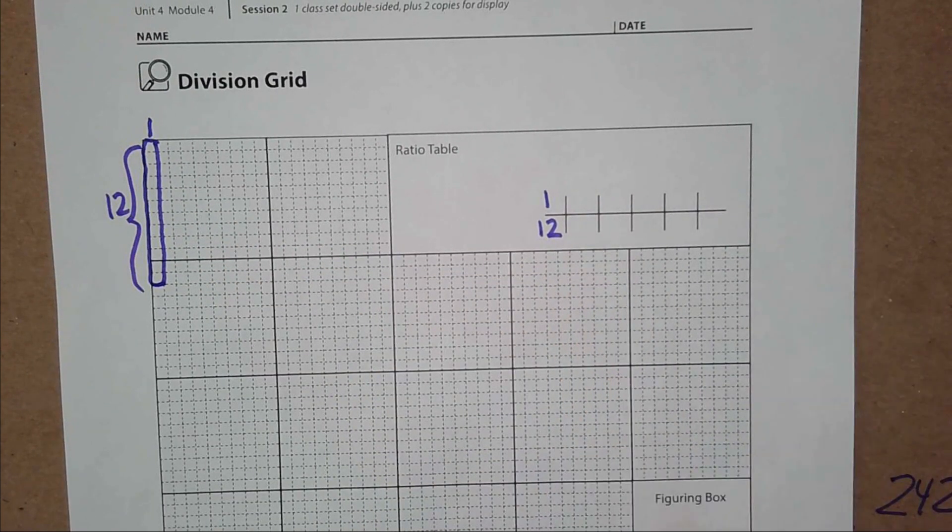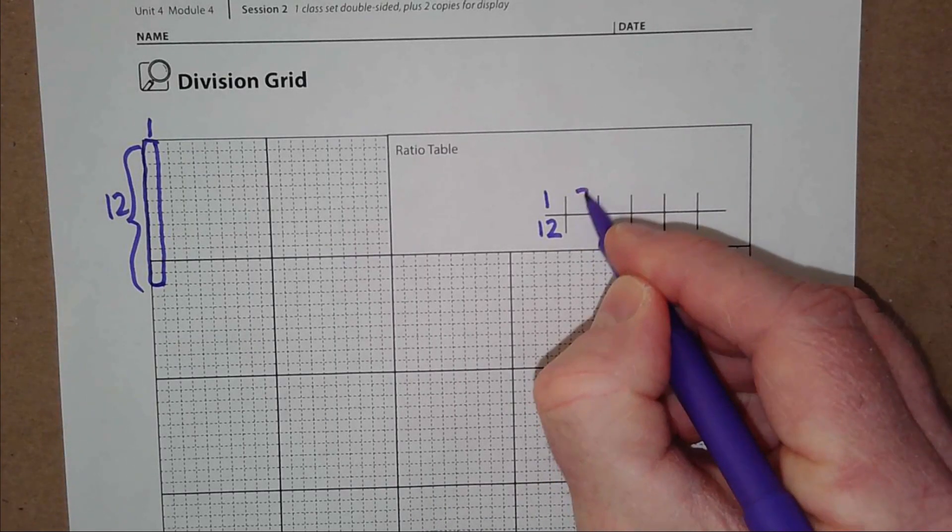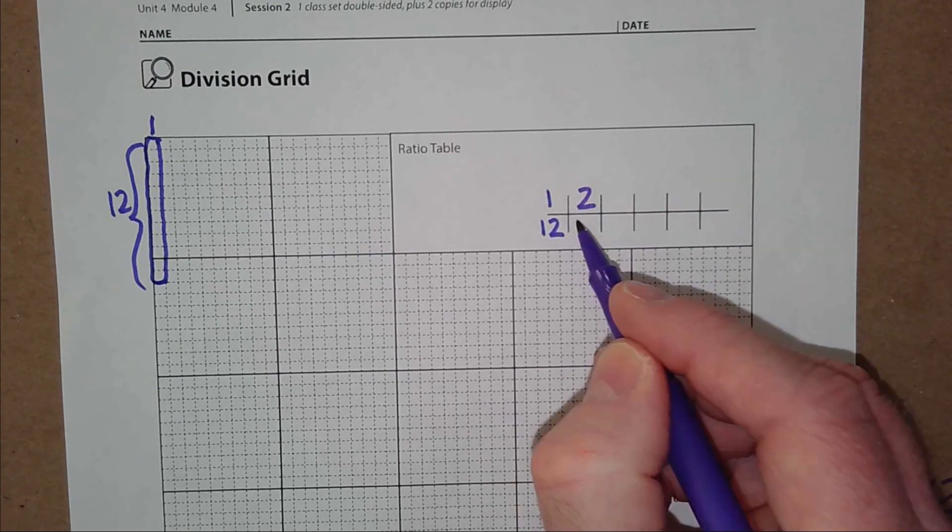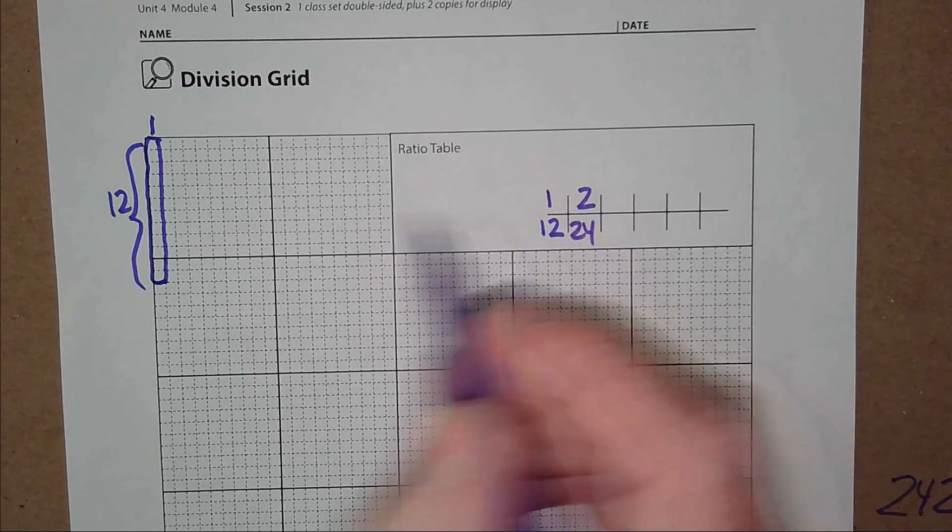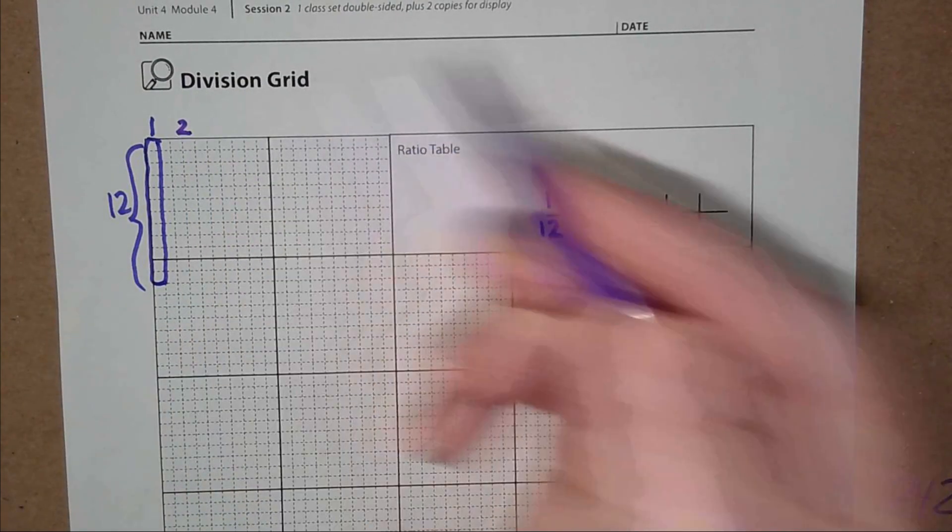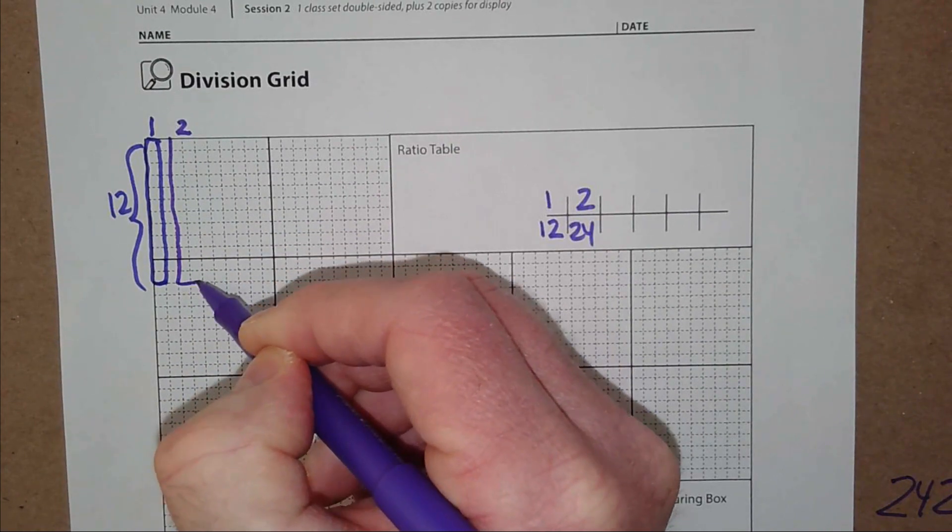After one, we typically do what? Two. Let's do two again. If we know one group of 12 is 12, two groups must be what? 24. Over here, I'm going to make a larger group. Now I'm going to have two groups of 12. Here's one group, two groups. There's my two groups of 12.